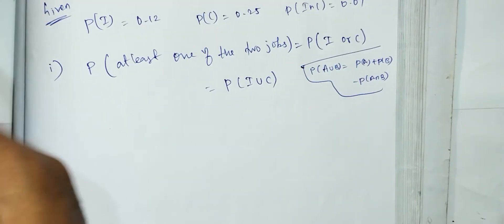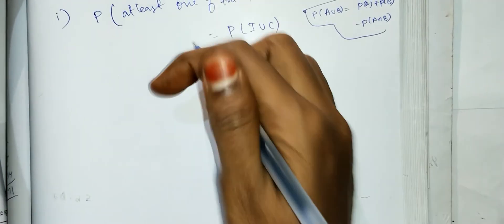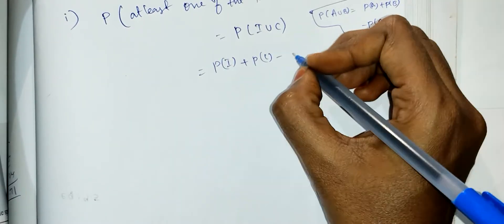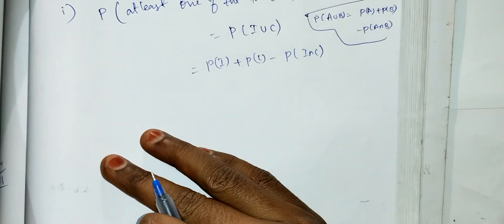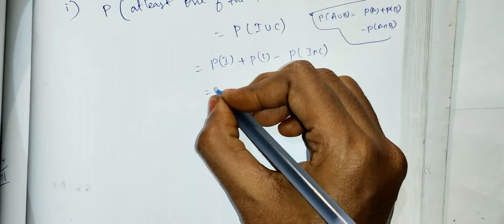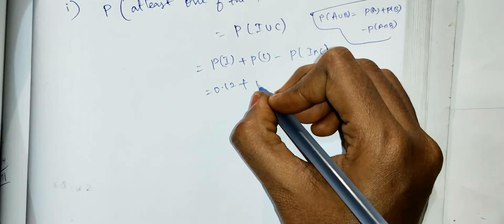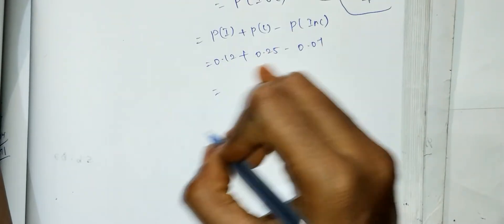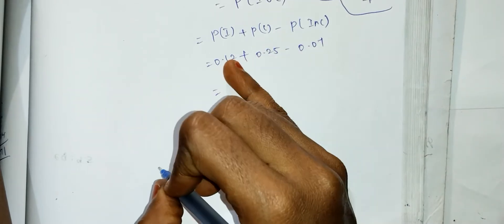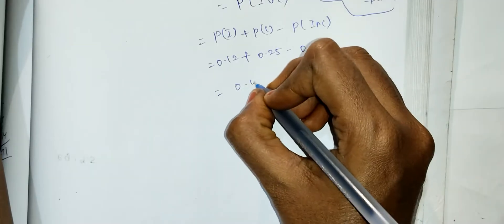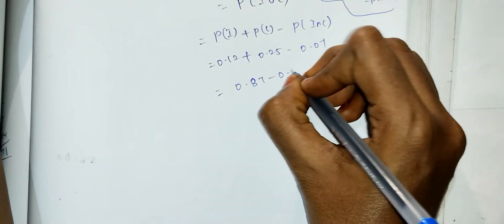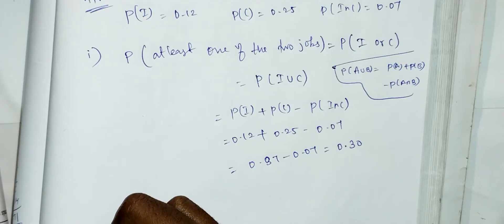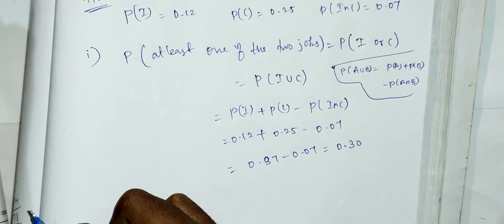Substituting the values: P(A) = 0.12, P(C) = 0.25, P(A intersection C) = 0.07. So P(A union C) = 0.12 + 0.25 - 0.07 = 0.37 - 0.07 = 0.30. So the answer to the first question is 0.30.